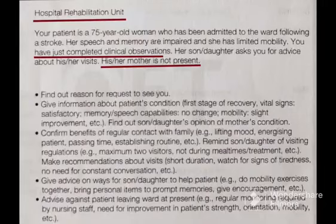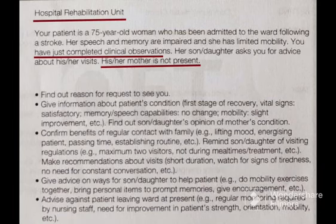The next scenario is a hospital rehabilitation unit. Take note: hospital rehabilitation unit, aged care facility, or nursing home scenarios are different. Visitors are the interlocutor because relatives do not stay with the patient — they come to visit, and sometimes after the visit they come to inquire about their parents. In this scenario, your patient is a 75-year-old woman admitted to the ward following a stroke.